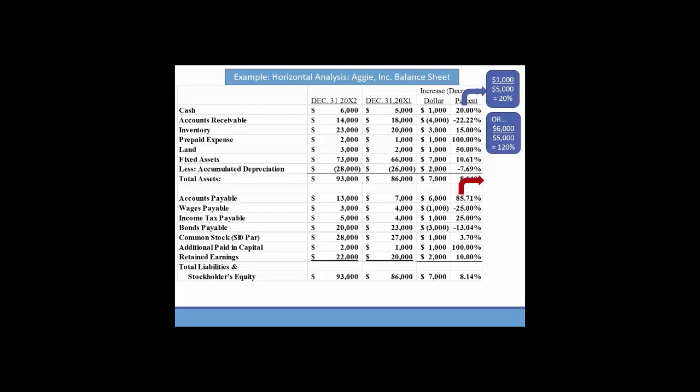Now if we turn our focus to the liabilities, we could calculate that in one of two ways as well. We could say that accounts payable increased $6,000 over the base year amount of $7,000. It increased 85.71%. Alternatively, $13,000 for 20x2 divided by 7,000 for 20x1 says that accounts payable is 185.71% of what it was last year. So they both indicate about an 86% increase in our accounts payable. Horizontal analysis looks at changes in accounts over time. If you had multiple years, you could identify whether cash was on an upward trend or a downward trend.